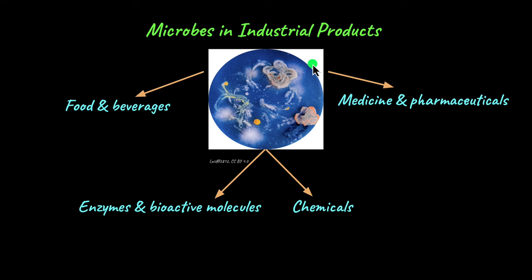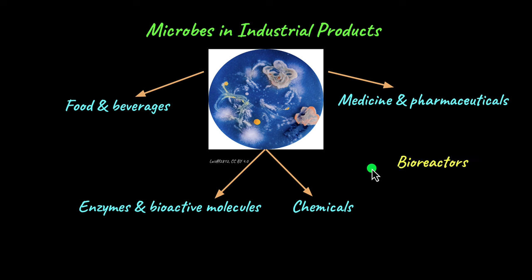These products are not produced at a small-scale laboratory level using petri dishes or beakers. They are produced at an industrial level, at a large scale, where these organisms are grown or cultured in tankers known as bioreactors — huge tankers in which microorganisms are grown along with their substrate under specific favorable conditions. The products produced are then extracted and purified from these bioreactors.